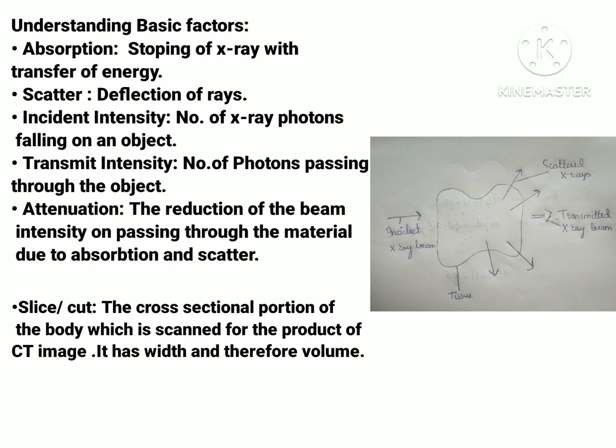Whenever there is a need to know the degree of alternation, we can obtain it by comparing the incident and transmit intensity. When both are compared, we can get the degree of alternation — meaning how much reduction of x-ray beam there is. If there is a more dense material, there is less transmittance of x-rays, and when there is a less dense material, there is more transmittance of x-rays.